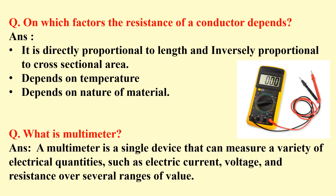The next question is: what is a multimeter? A multimeter is a single device that can measure a variety of electrical quantities such as electric current, voltage, and resistance over several ranges of values.